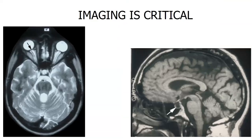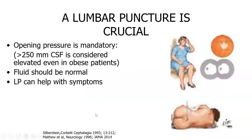Disc swelling — papilledema — is a sign of increased intracranial pressure. On imaging, we can see fluid along the optic nerve sheath pushing on the back of the globe. A lumbar puncture is necessary to measure the pressure — 250 mm H₂O is considered normal in adults; in children, up to 275 is acceptable. The CSF must also be normal; if it isn't, that suggests a secondary cause.